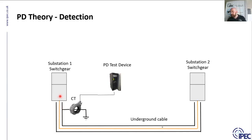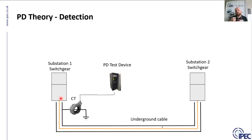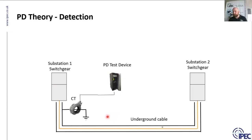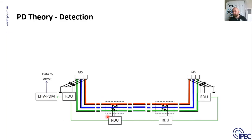At HV and EHV levels — hundreds of kV — the earth is definitely isolated from the switchgear, but at lower voltages this may not always be the case. If the earth is directly connected to the switchgear, the HFCT must be installed on the core of the cable, typically inside the termination. We assess this case by case with customers and are happy to consult.